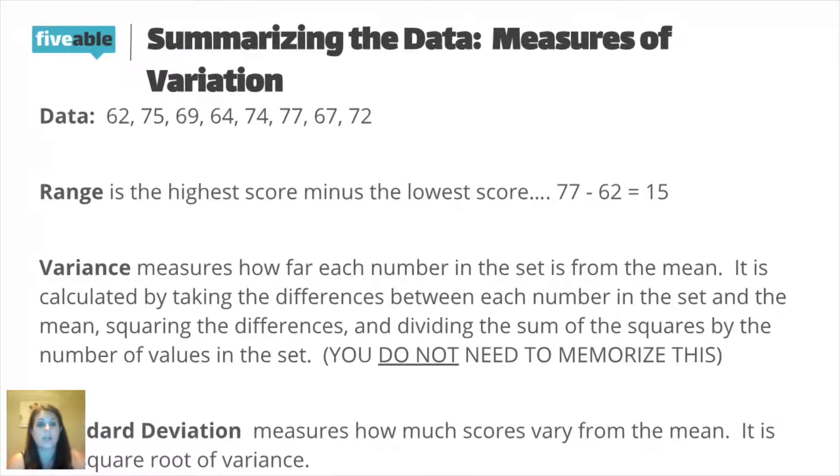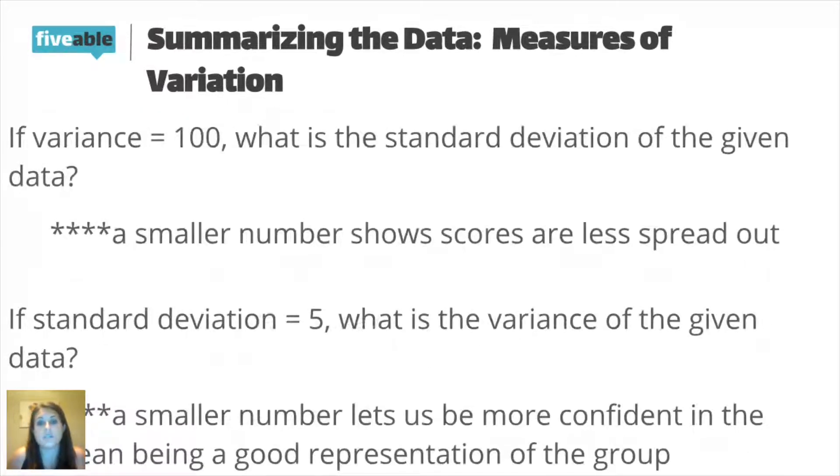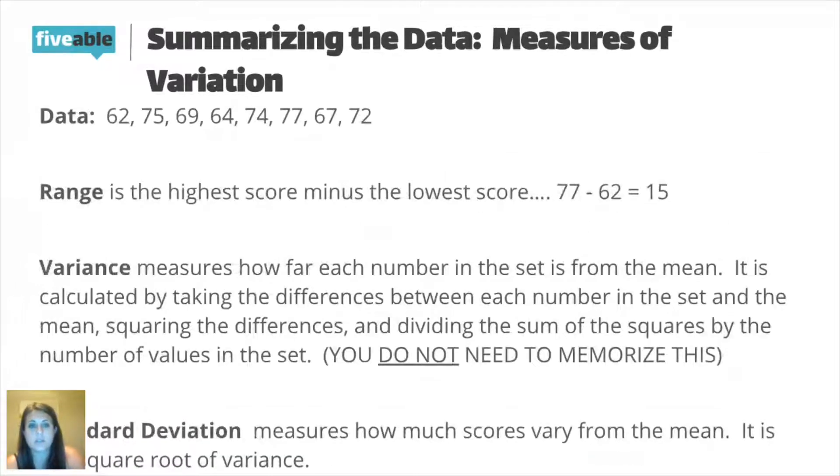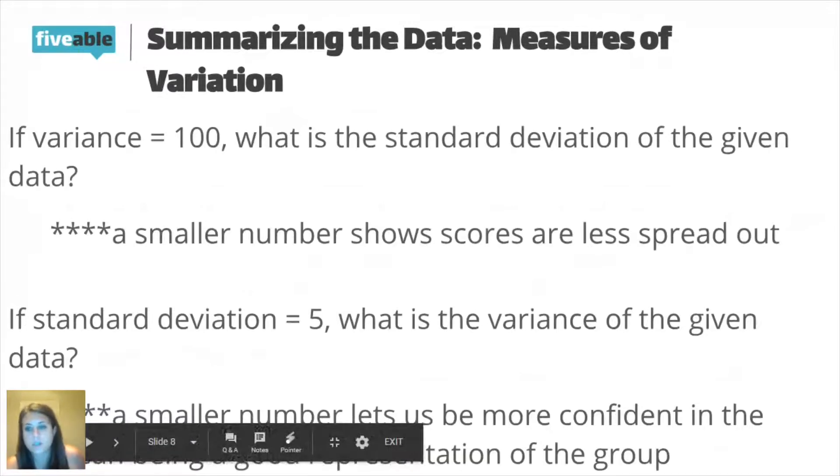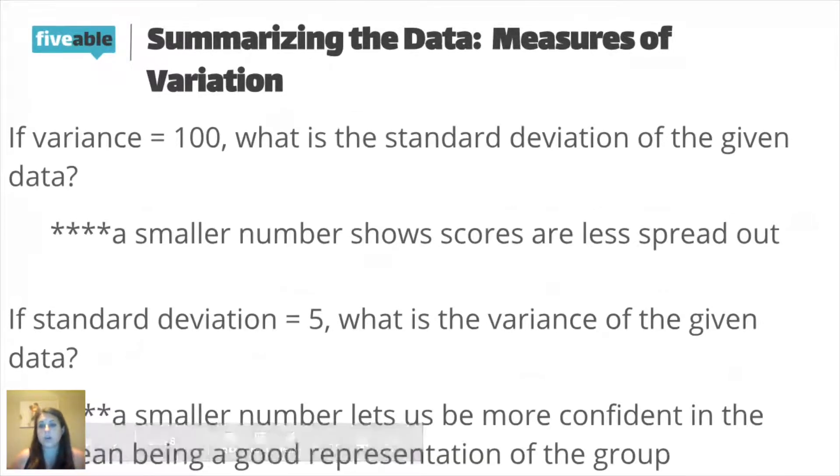So if there was a question on the AP test, I'm going to throw this at you. If variance equals 100, what is the standard deviation of the data? There's not too many people in here, but if someone wants to take a shot at that. If variance is 100, what is the standard deviation of the given data? And I'll leave that for a second and actually flip back. So remember, standard deviation is the square root of variance. So in that question, it is the square root of 100. So that would be 10.